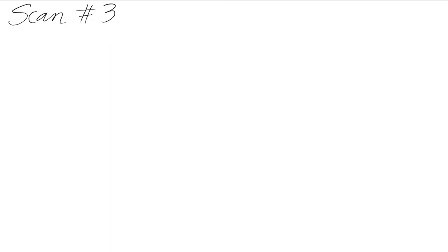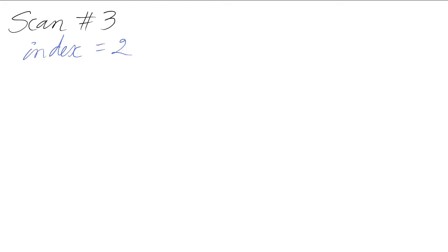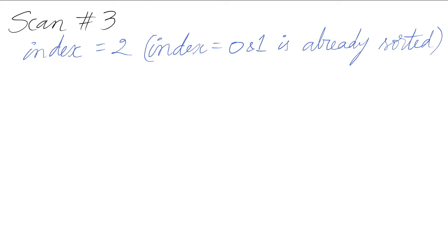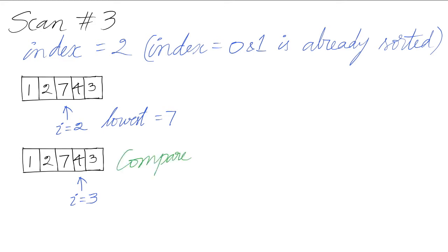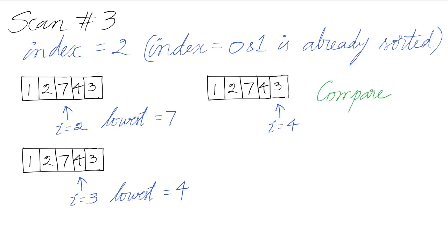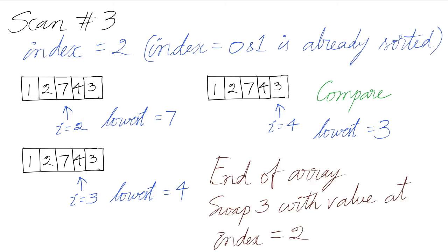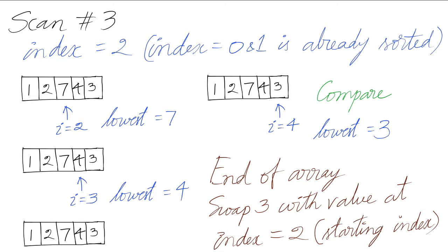Let's begin scan number 3. The index will be 2 in the beginning — positions 0 and 1 are already sorted. We start with the third element and the lowest we have seen so far is 7. We go to the next element and compare 4 with 7 — now 4 becomes the lowest. We go to the next element and compare 3 with the lowest, which is 4 — now lowest is 3. We have reached the end of the array, so we swap 3 with the value at index 2. We need to move the last element with the next element. Given this list at the beginning of the scan, we will move 3 to this position and 7 will move to the last position.